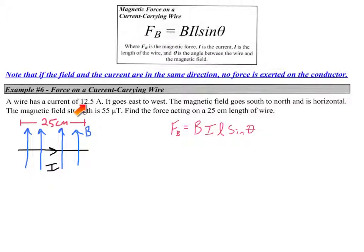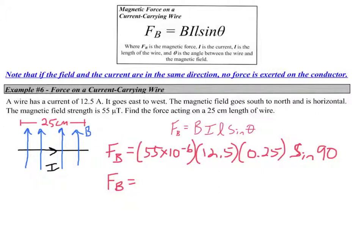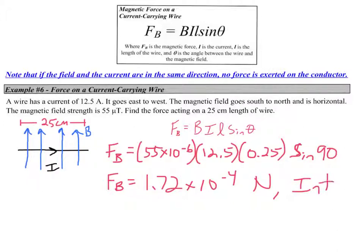For example, if we have a current of 12.5 amps going from east to west, the magnetic field goes south to north with a strength of 55 microtesla, and we want to find the force acting on a 25 centimeter length of wire, we break out BIL, make sure all our values are in correct SI units, and we end up with a force of 1.72 times 10 to the negative 4 newtons. By the right-hand rule, the direction of that force is going to be into the page, because these are electrons moving through this wire, so the direction of the force is opposite that of our tall-man finger in the right-hand rule.